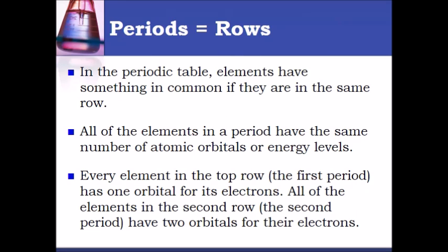In the periodic table elements have something in common if they're in the same row. All of the elements in a period have the same number of atomic orbitals or energy levels. Each element in the top row has one orbital for its electrons. In the second row they have two orbitals for their electrons and in the third row they have three orbitals for their electrons.